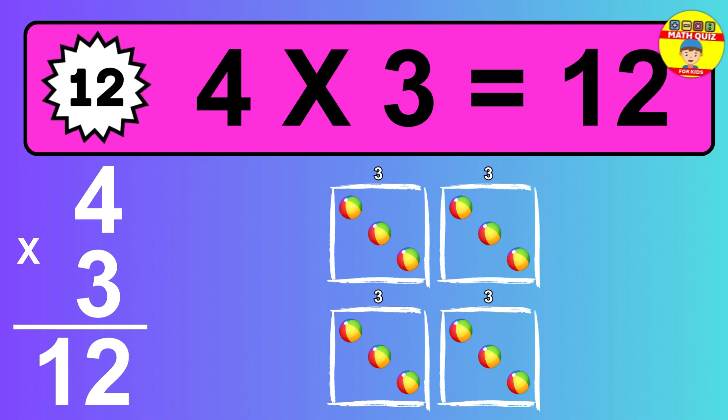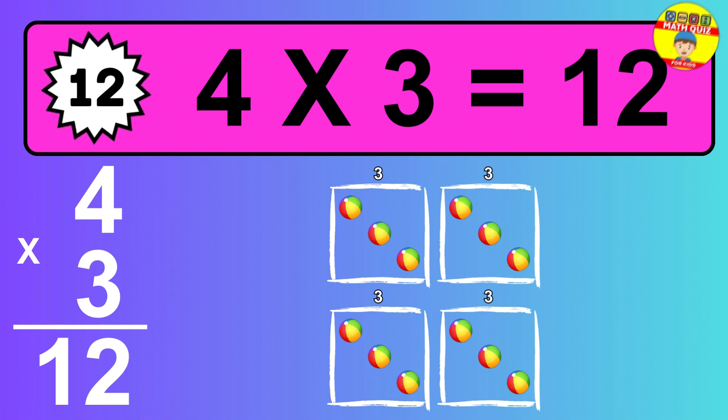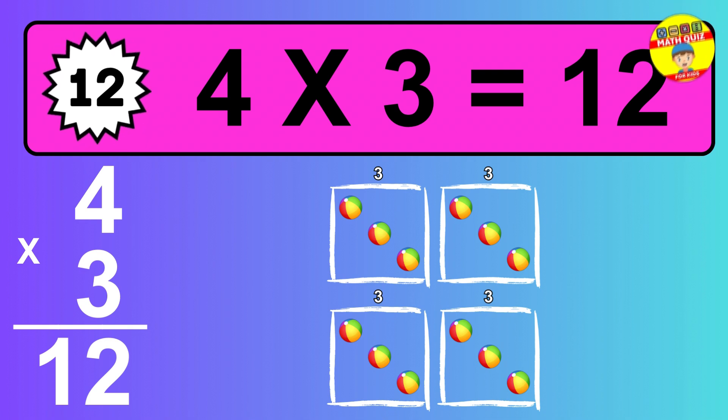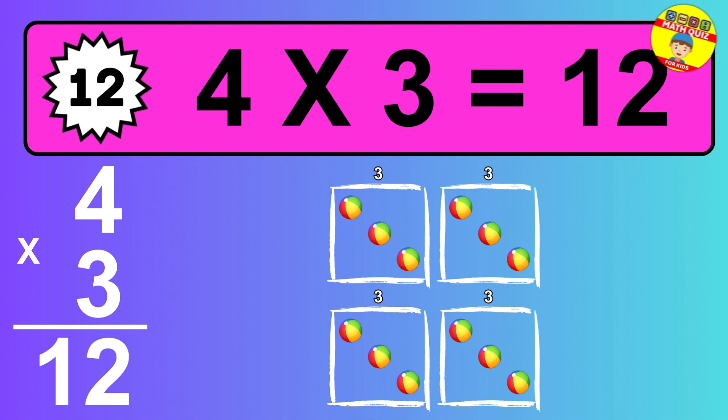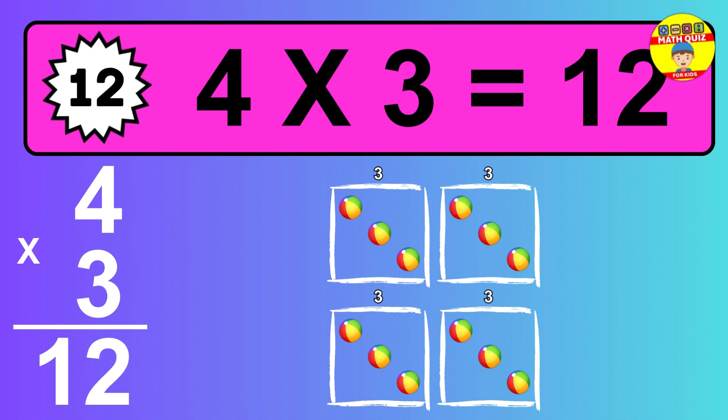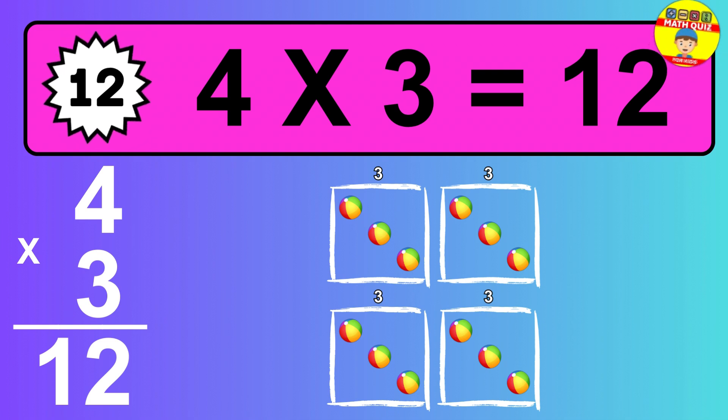Question 12. Four times three equals what? The answer is four times three is twelve. To calculate, we have four groups with three balls each one. So how many balls do we have? Twelve balls.